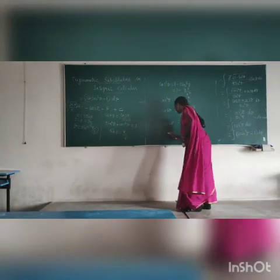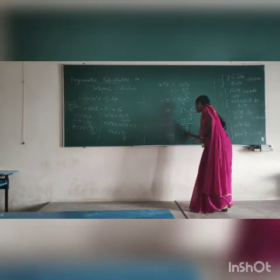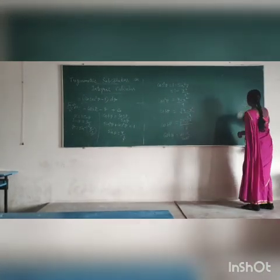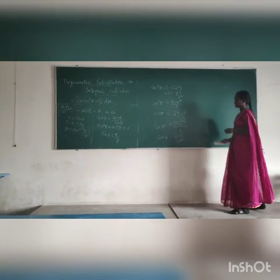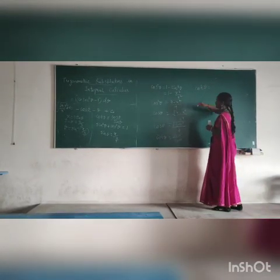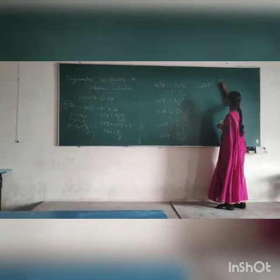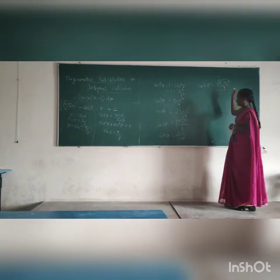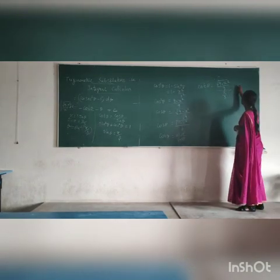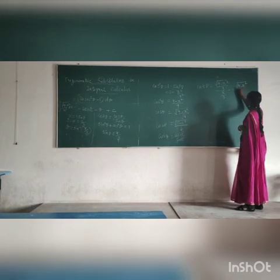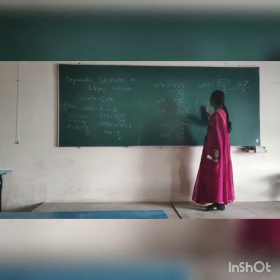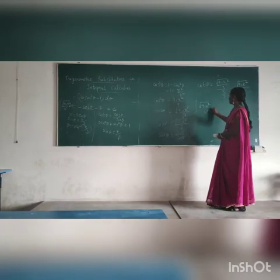We know that cot theta equals cos theta divided by sin theta. We already have the values: sin theta is x by 3, and cos theta is root of 9 minus x squared divided by 3. Substituting in cot theta: cot theta equals root of 9 minus x squared divided by 3, divided by x by 3. Here 3 and 3 get cancelled, so cot theta equals root of 9 minus x squared divided by x.